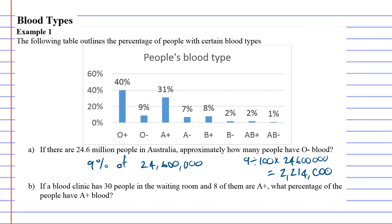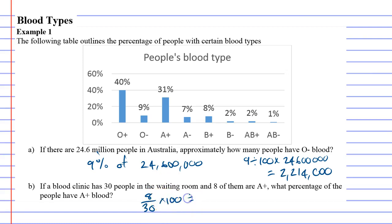When you get questions where they want your solution as a percentage, start by writing it as a fraction first. Eight out of thirty people are A positive — the total goes on the bottom, the amount you have goes on top. Once you have the fraction, multiply it by 100.